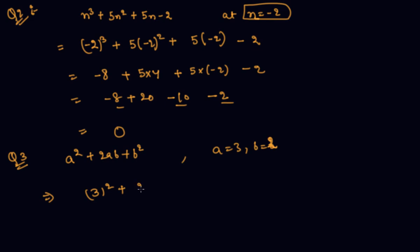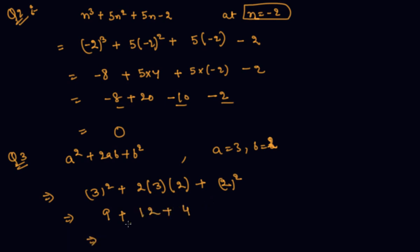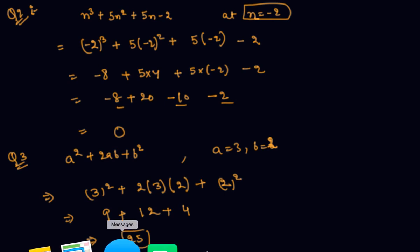These are basically two variables, and matching these kinds of questions will come in the exam. 3 squared is 9, plus 2 into 3 is 6 into 2 is 12, plus 2 squared is 4. So this will be 21 plus 4 is 25. The value of the expression is 25.